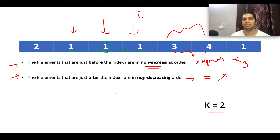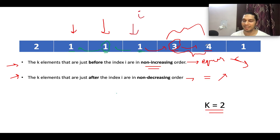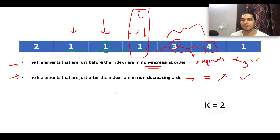The second condition says two elements to the right should be non-decreasing — increasing or equal. Comparing those two right elements: one is greater than the other, so it is increasing. Comparing further right, those two are also increasing. Both constraints are met, so the current index is a good index and will be part of the answer set.